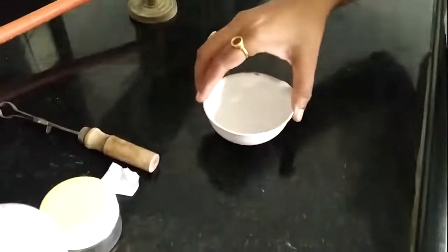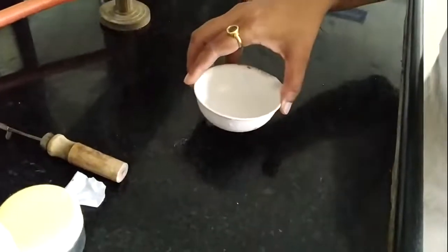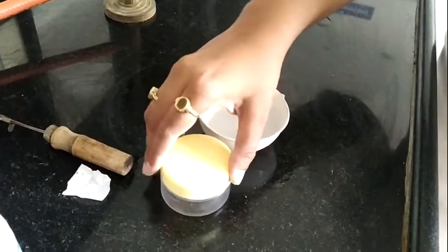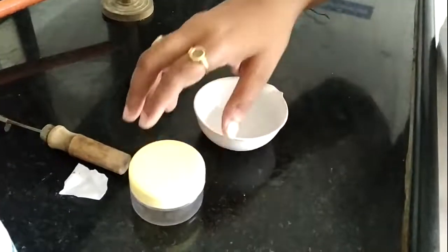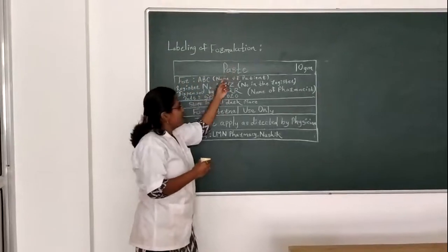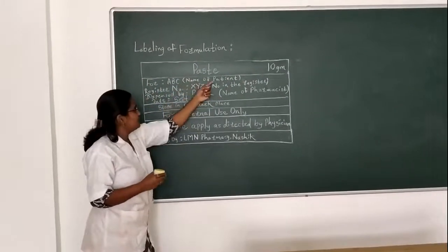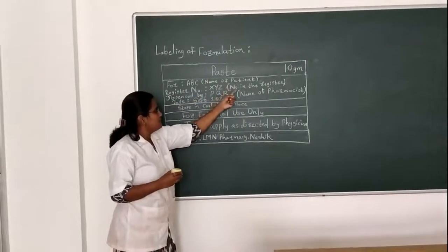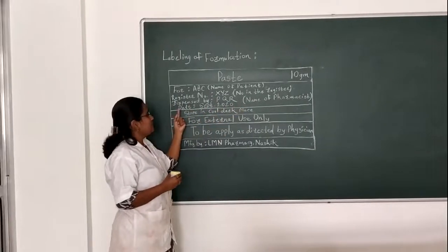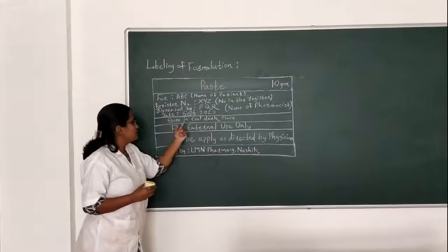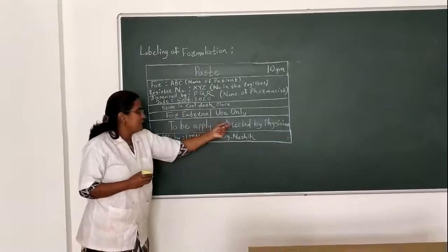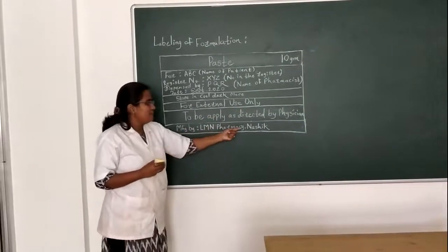I poured this thick paste into a shallow evaporating dish instead of a shallow tray, and then transferred it into the container. We will now proceed to the labeling part. The label includes: formulation paste 10g, patient name, register number, dispensed by pharmacist, manufacturing date September 2020, stored in a cool and dark place, for external use only, to be applied as directed by physician.